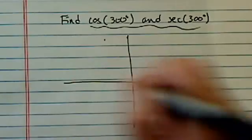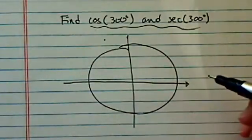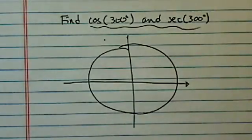We have an interesting trig function here to evaluate. Let's draw our unit circle. The reason we draw a unit circle is the best way to find sine cosine angles.